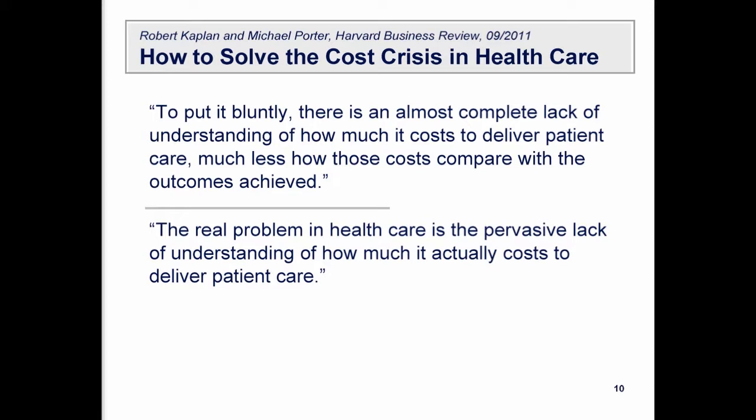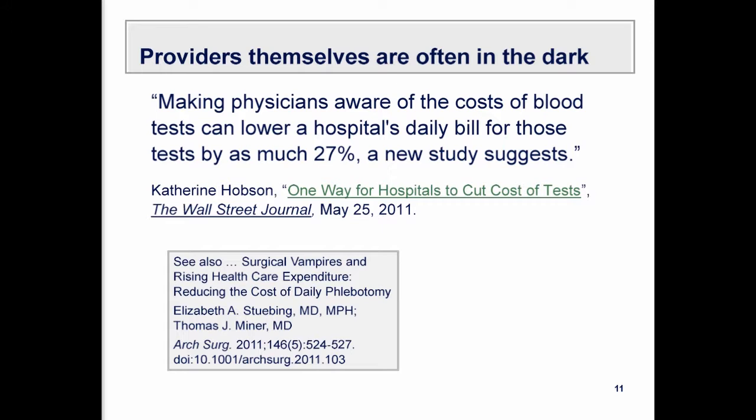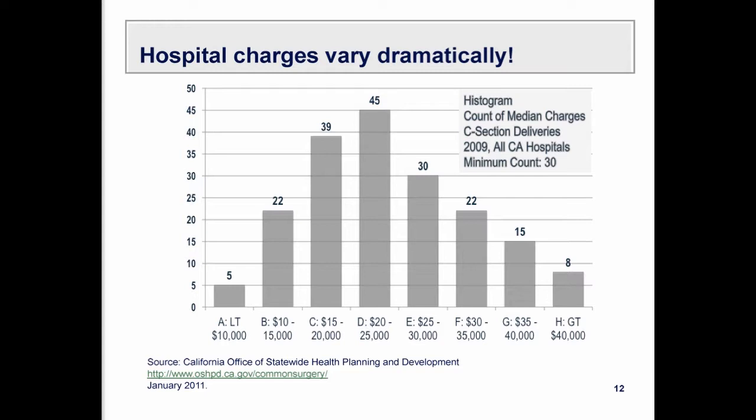Nobody really knows what stuff costs — and it's not just the patient who doesn't see this transparently, but often the individual provider as well. Adding even a little bit of transparency can dramatically change the way decisions are made. Just making physicians aware of the cost of a blood test can lower a hospital's daily bill by as much as twenty-seven percent.